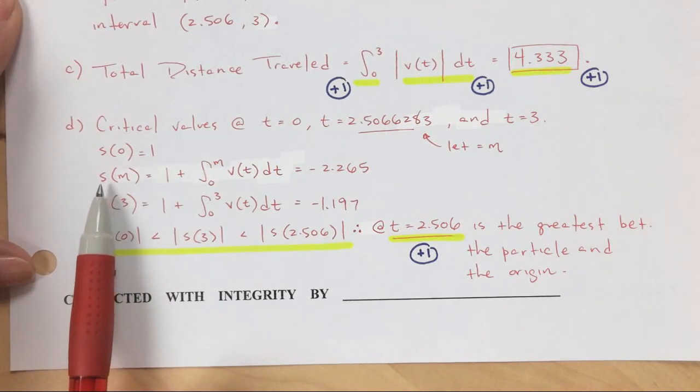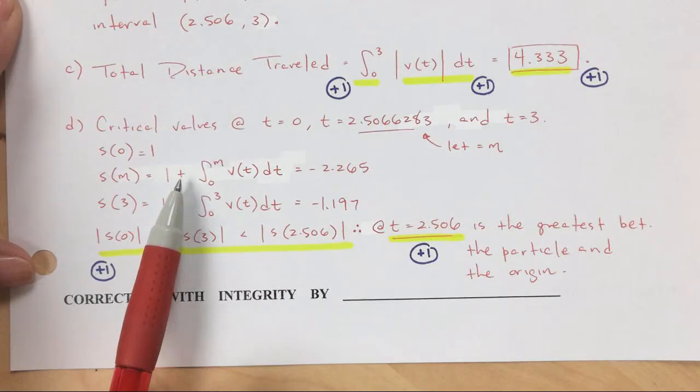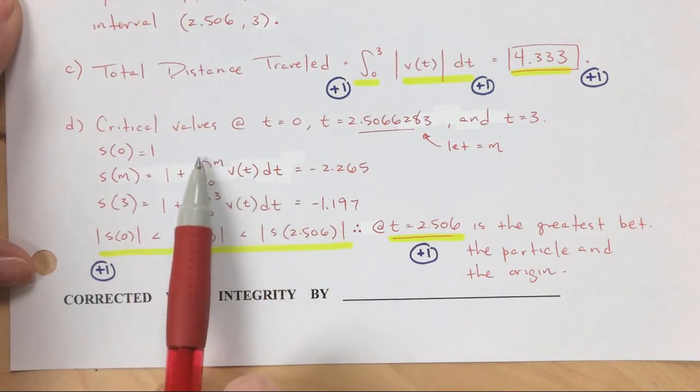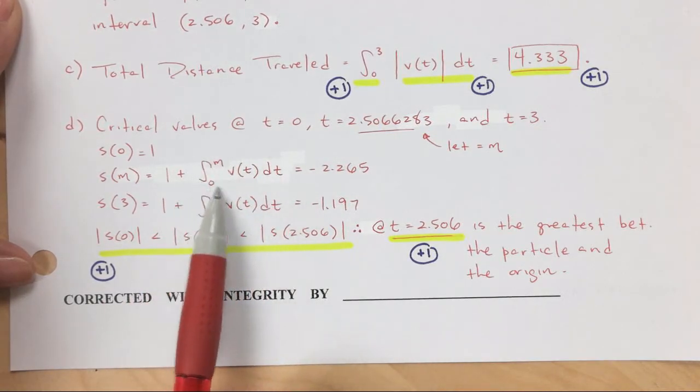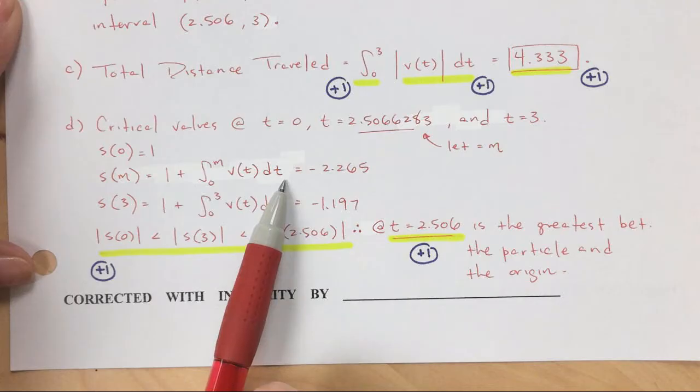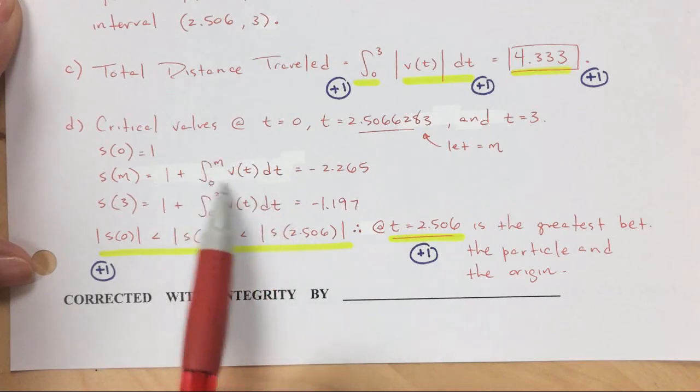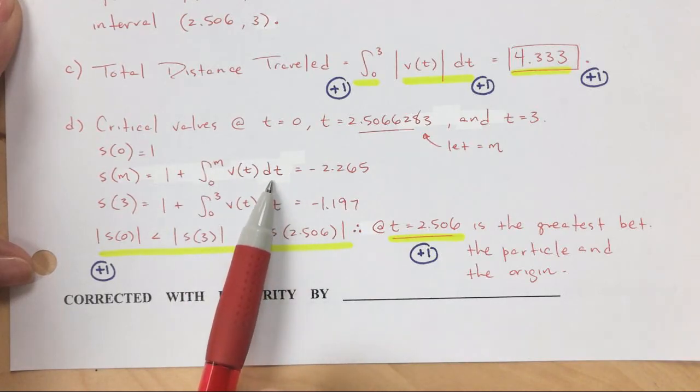Okay. At time 2.5, blah, blah, blah, I'm 1 unit plus this is my new distance, right? So this is how far I am from my origin. So this plus gives me that. This, I can literally plug into my calculator. I'm doing, what is it, math 9, I think.